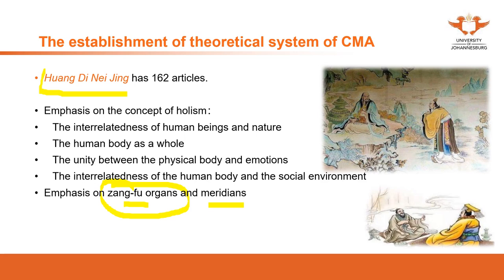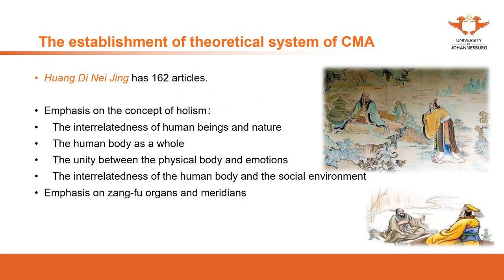This book was actually a summary of medical knowledge before 475 BC. A lot of important information has been discussed in the Huangdi Neijing, and that information remains very relevant even for our study today. That's why it is considered one of the classics.